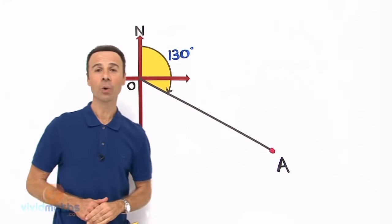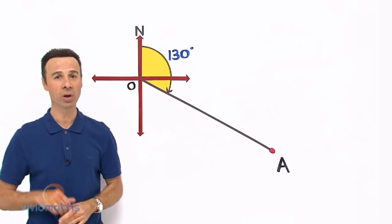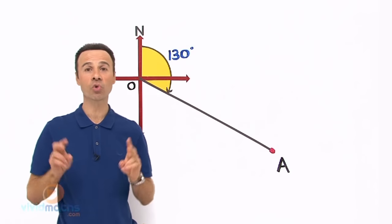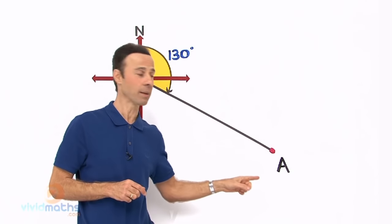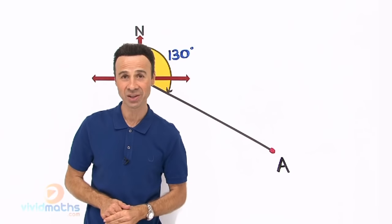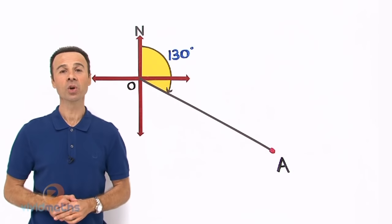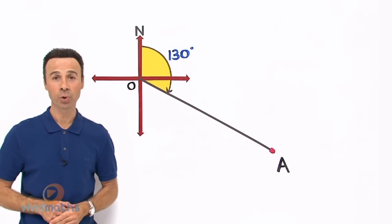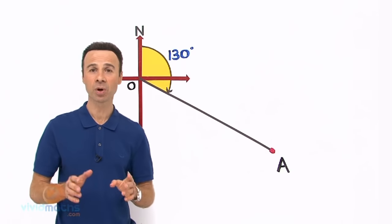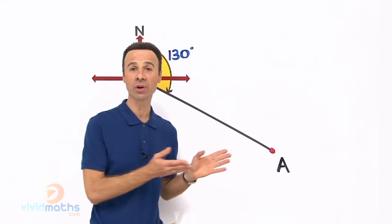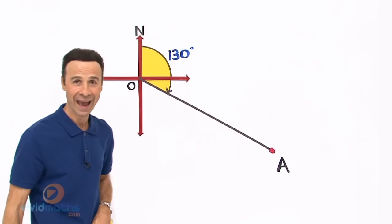Now the first thing we do when we hear the magic word 'from' is we need to draw in the diagram. We need to draw in the crosshairs: north, east, south, and west. Now you probably heard me say before that a problem well drawn is a problem half solved. So let us draw in the crosshairs right over here at A.